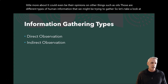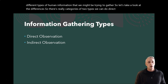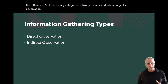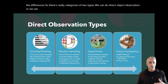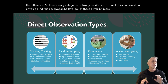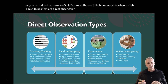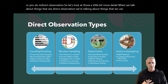There are really two categories. We can do direct observation, or we can do indirect observation. Let's look at those in a little bit more detail. When we talk about direct observation, we're talking about things that we can track or that we can count.